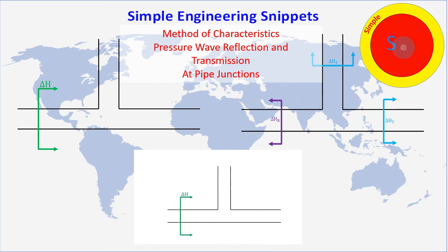Welcome to another simple engineering snippet. This video is a continuation in this series that investigates water hammer and pressure waves in fluid pipelines and analysis methods. In particular, in this video we're going to be looking to see how the method of characteristics handles an incoming wave to a multi-pipe junction.